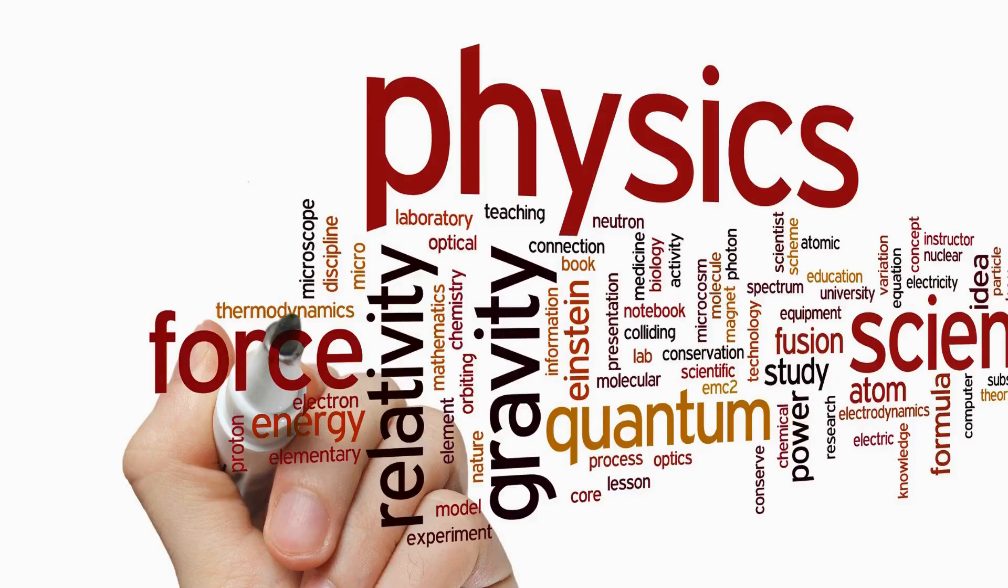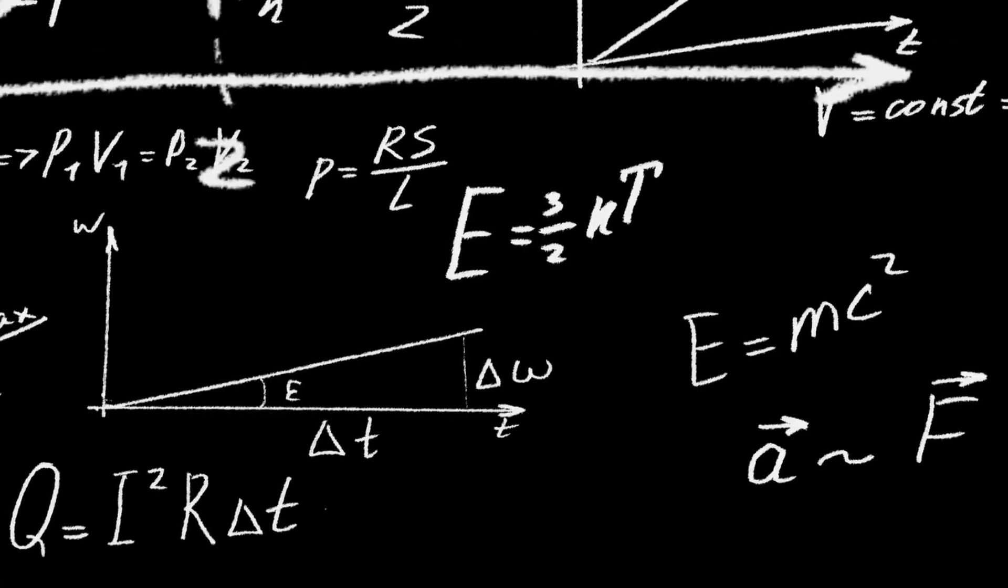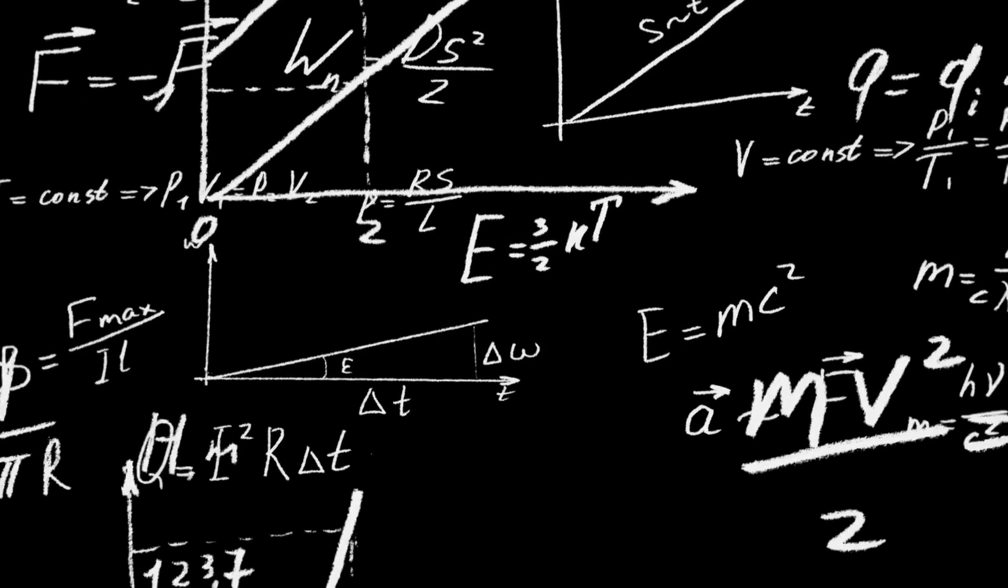What is the difference between classical physics and quantum physics? Classical physics is the foundation for understanding the world around us, especially on a scale we can directly perceive.